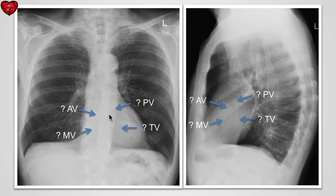On the PA and lateral x-rays, however, we cannot identify the valves directly. We can, however, establish the approximate position of the mitral and aortic valves using the following methods.